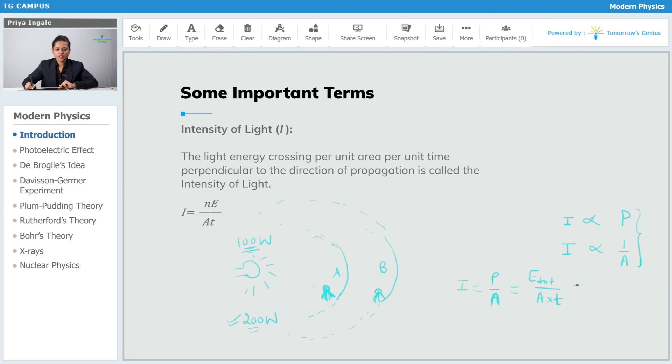Now, what is that total energy? If I say one photon carries energy h nu, and if there are n number of photons traveling through that particular area, then I will say n times E is the total energy, divided by area times time.